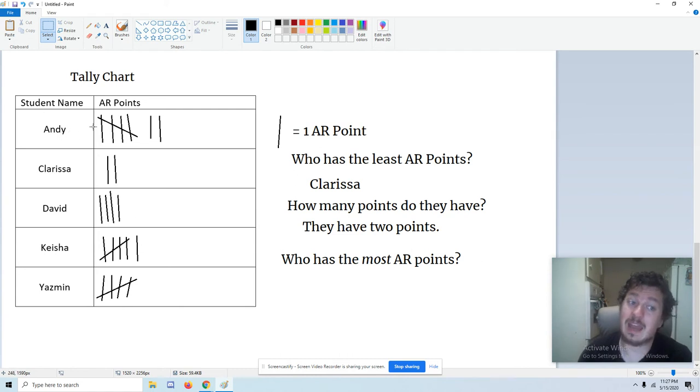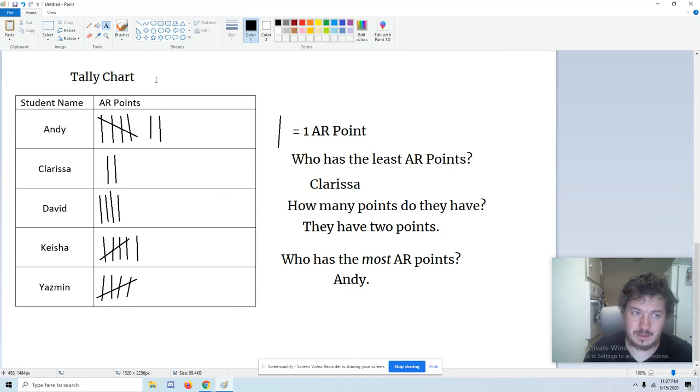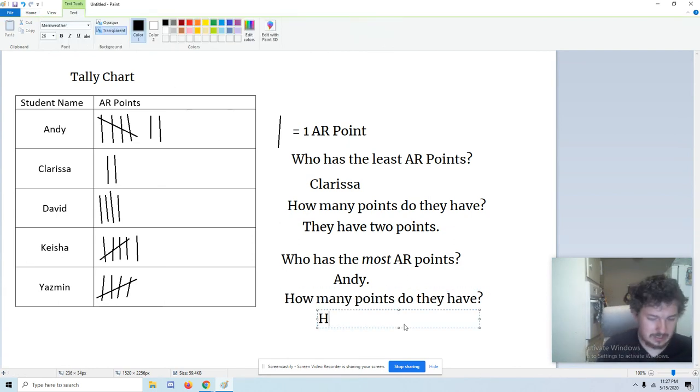Let's check Andy's. Andy has one, two, three, four, five, and two more. Six and seven. Andy has seven AR points, which is more than anybody else. Andy. That could be our answer. And then if we're asked again, how many points does he have? We can put, he has seven points.